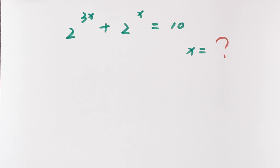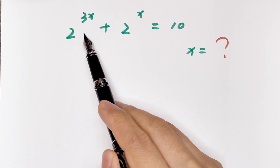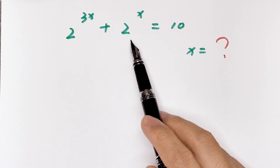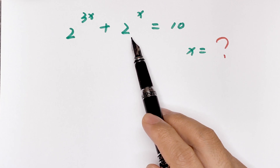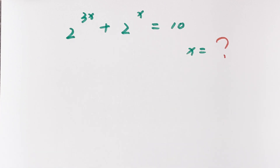Hello, welcome to Math4U. Today I'll solve this problem: 2 to the power 3x plus 2 to the power x is equal to 10. Find the value of x.